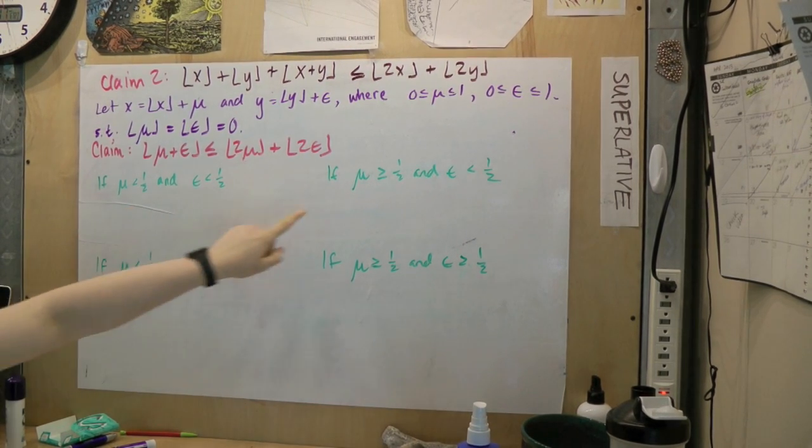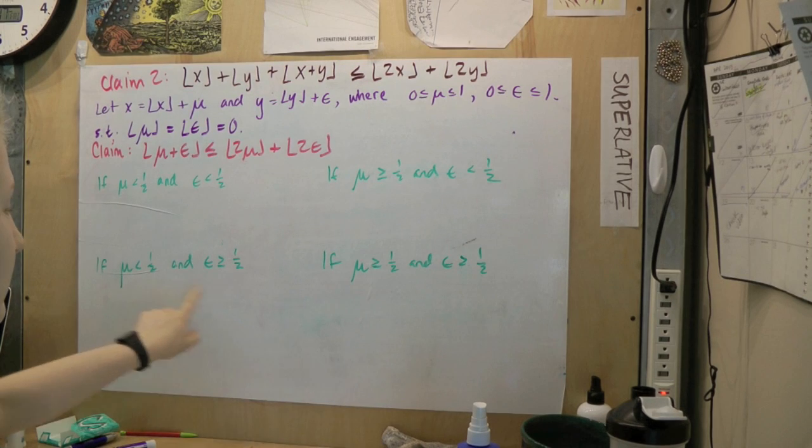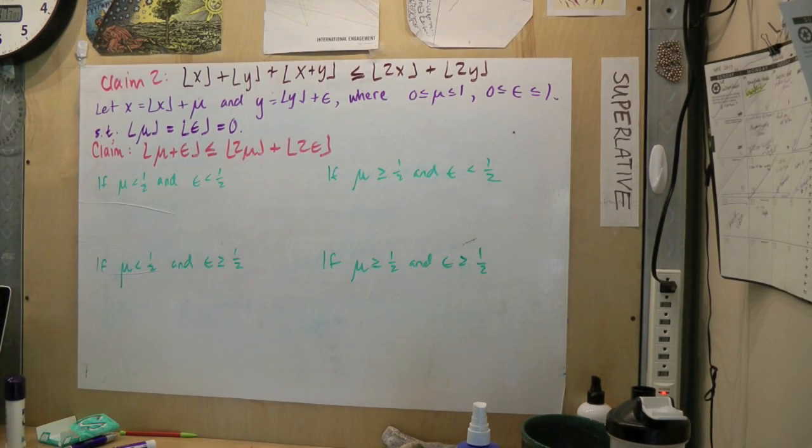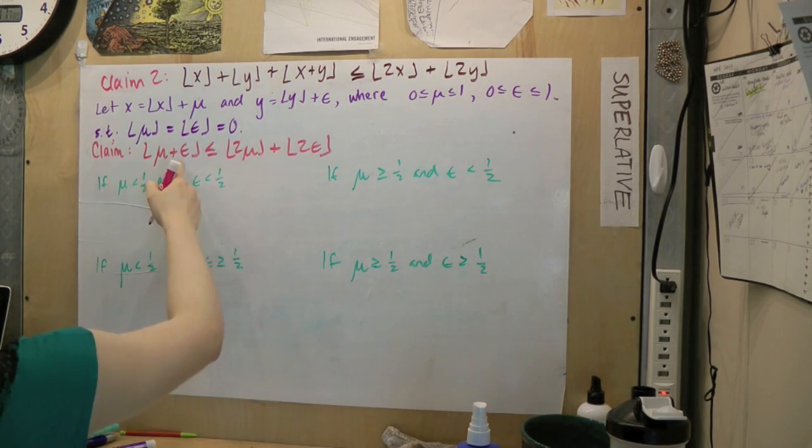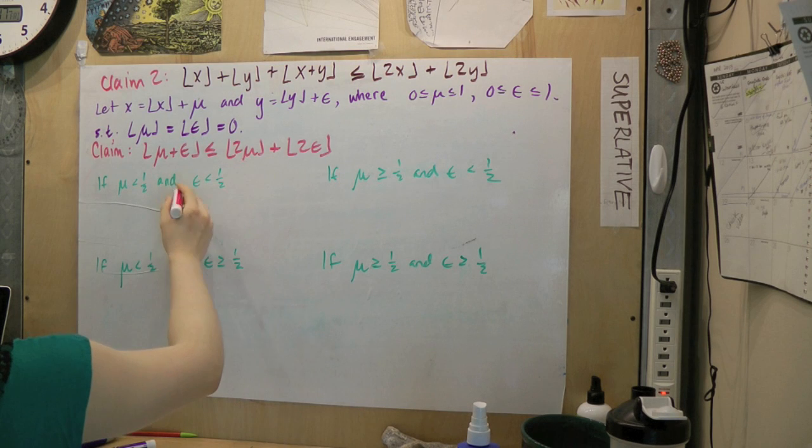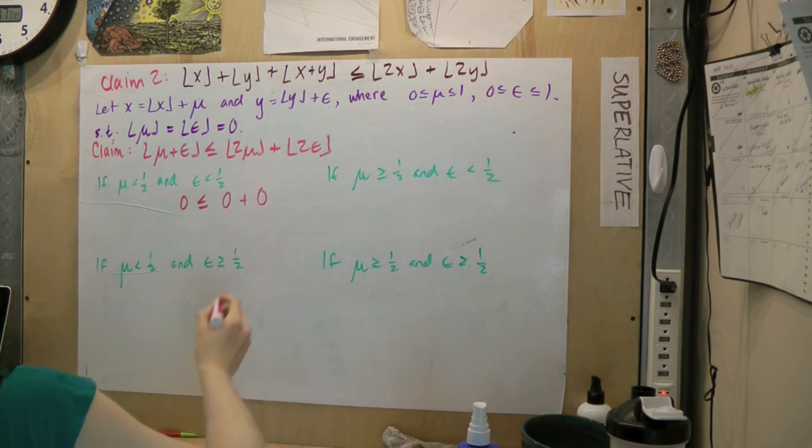We can break this down into four possible cases. If we can prove that the new claim is true in all four cases, then we have proven the original claim. In the first case, mu is less than 1 half and epsilon is less than 1 half. Thus, the left side is 0 and the right is 0 plus 0. Check-a-rooney! We have proven our first case.